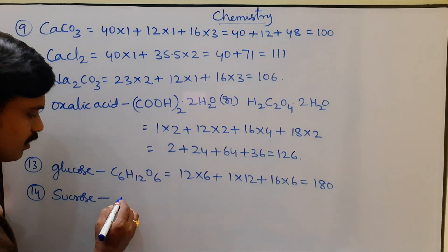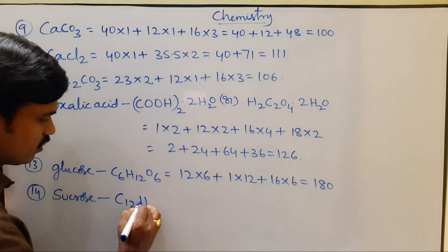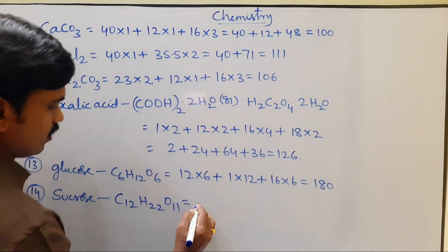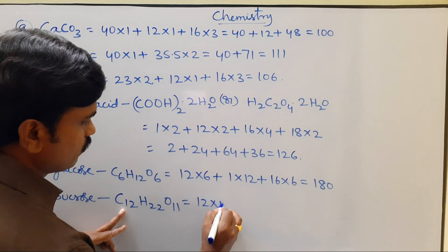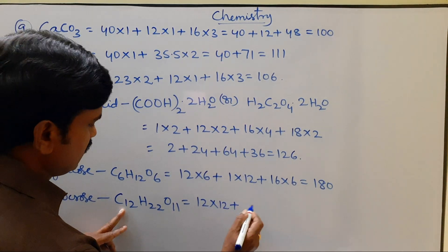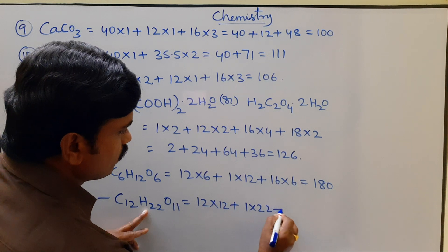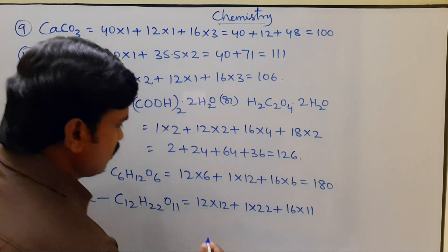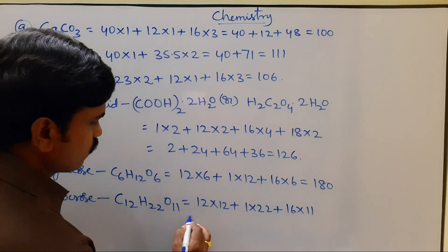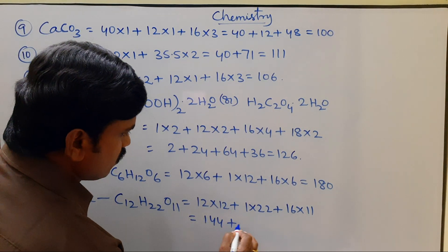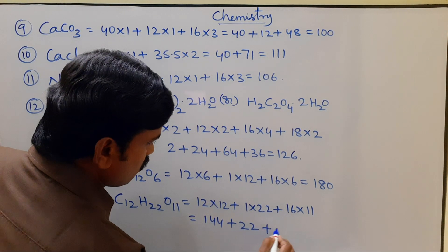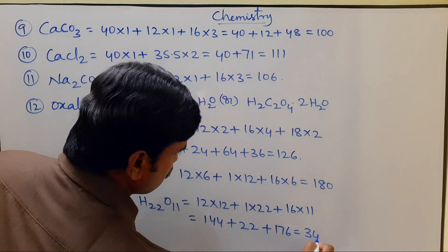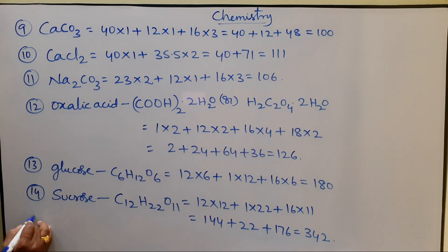Next is Sucrose. Sucrose chemical formula is C12H22O11. Calculation: 12 × 12 plus 1 × 22 plus 16 × 11, which equals 144 plus 22 plus 176, giving a total of 342.